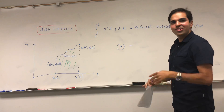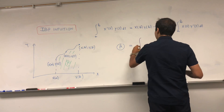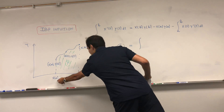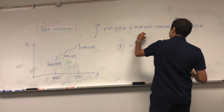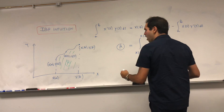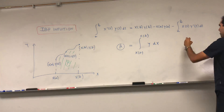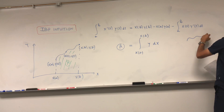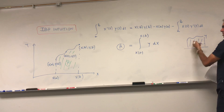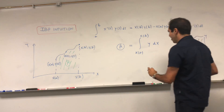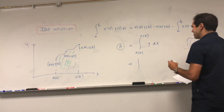Using the calc 1 definition, that area is the integral from x of a to x of b of y dx. That's the area under a function y from x. But we want to write this in terms of parametric equations.